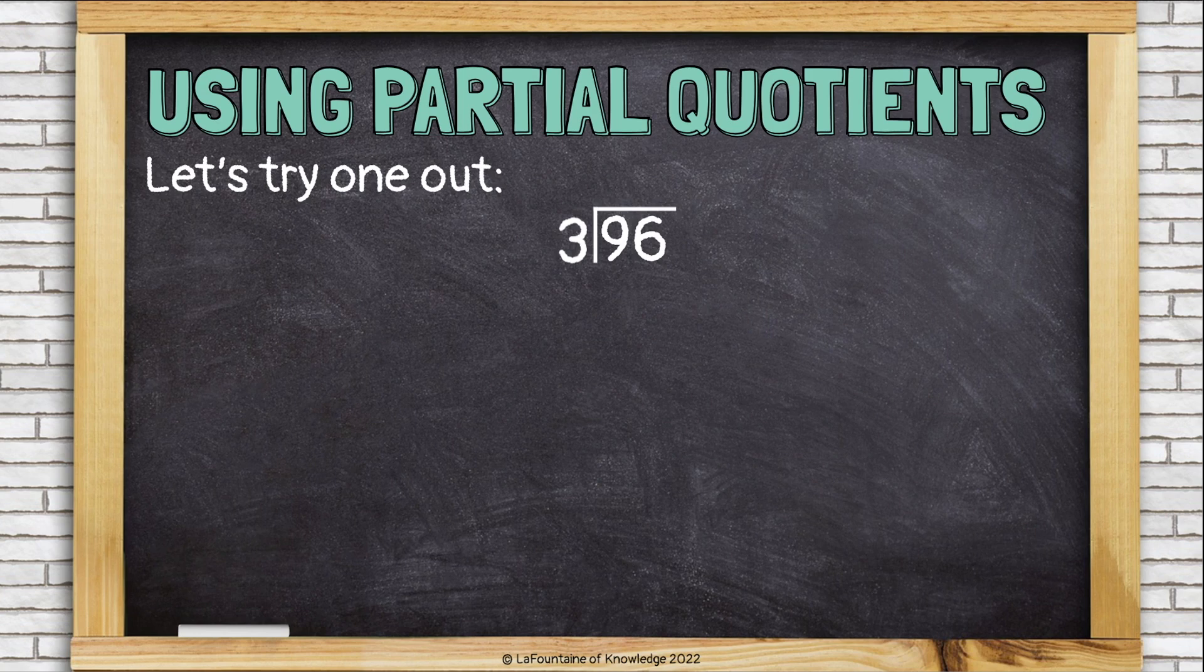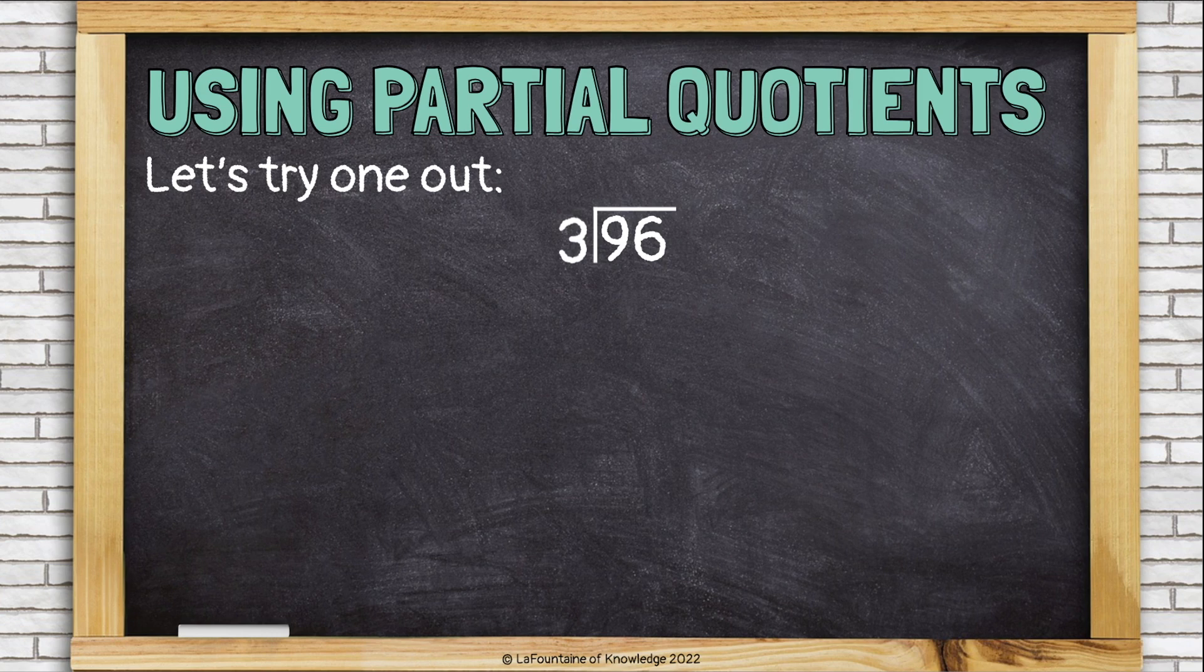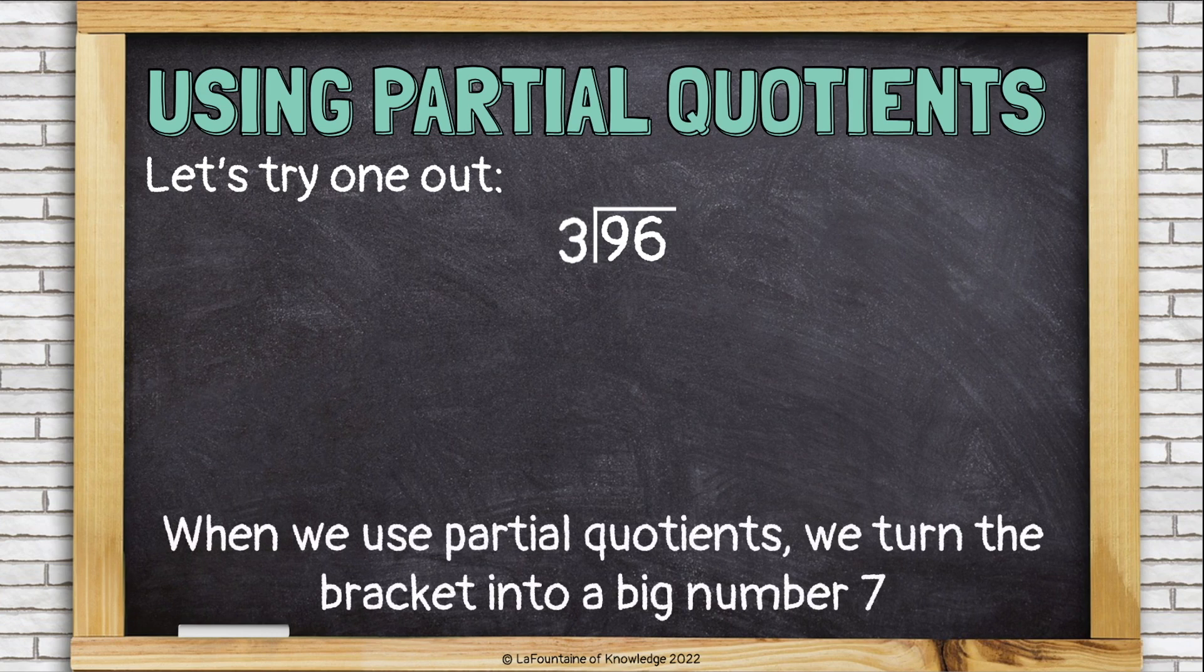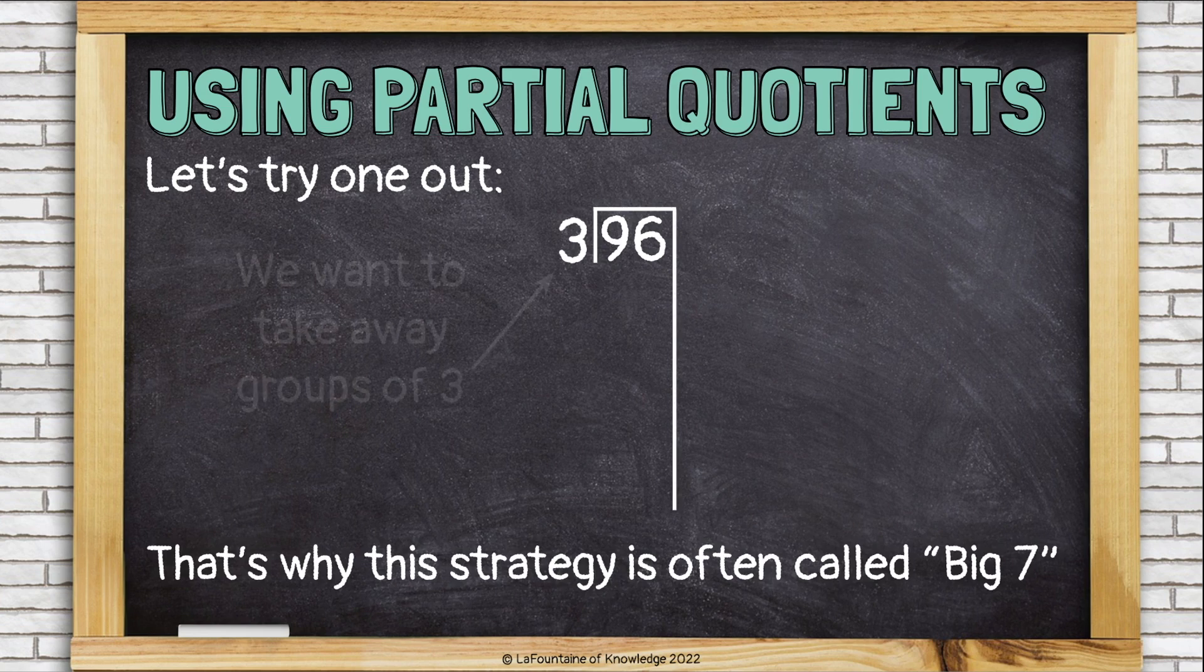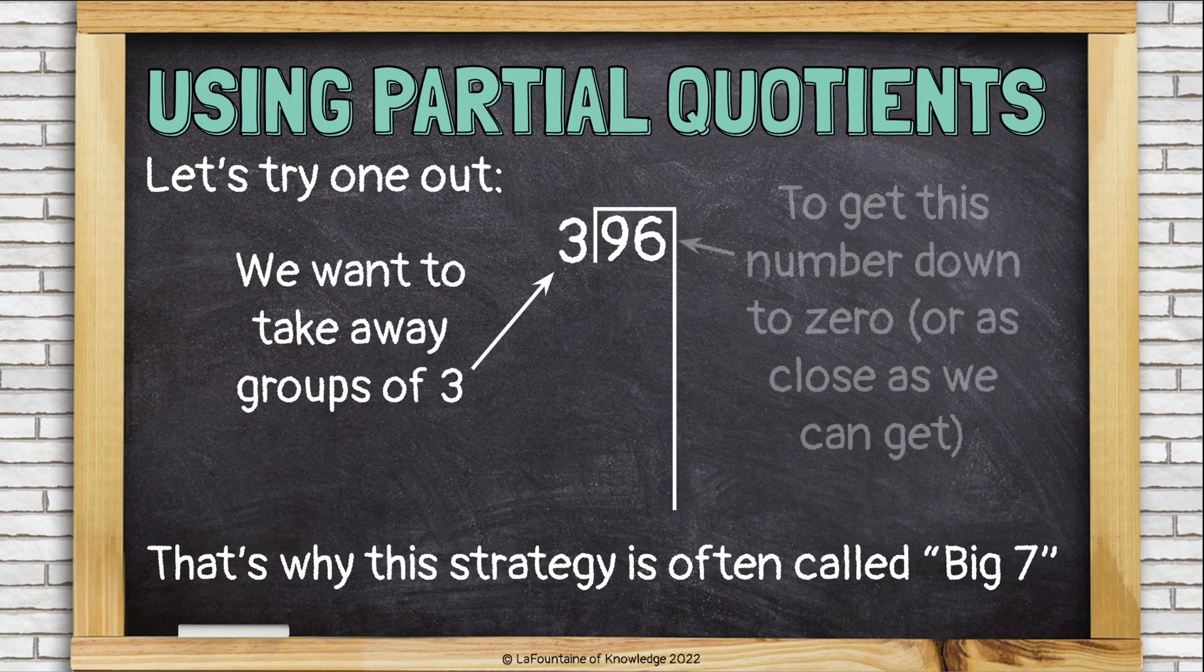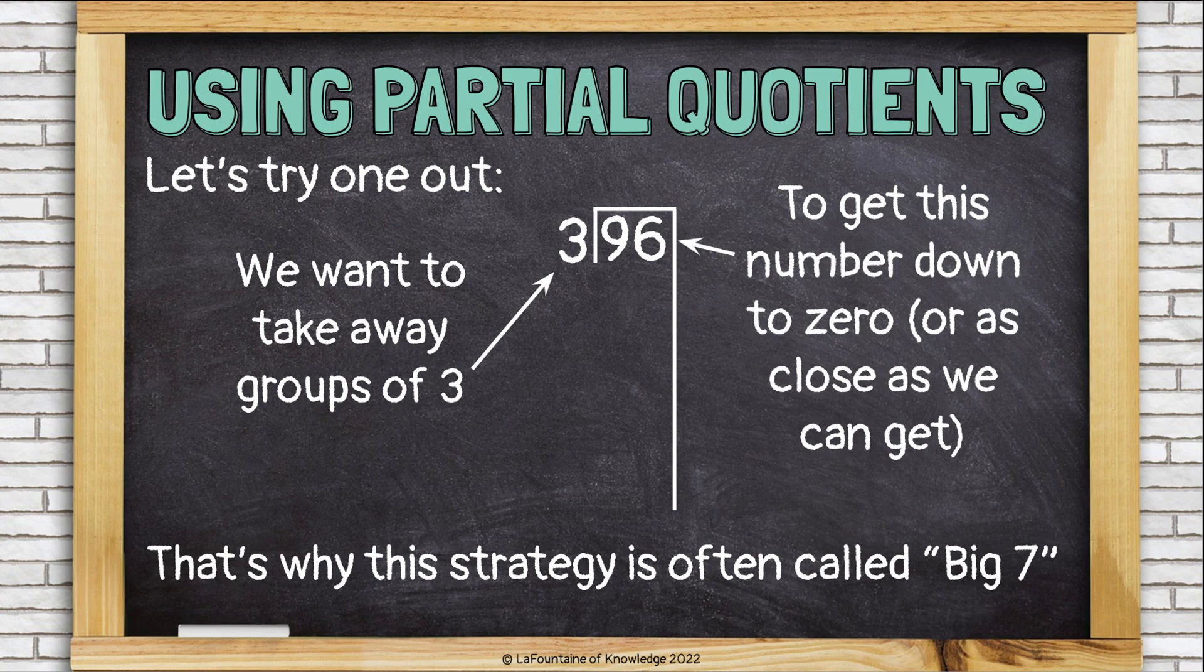Let's try one out. We're going to divide 96 divided by 3 using partial quotients. When we use this strategy, we turn the division bracket into a big number 7, like this. That's why this strategy is often called big 7. We want to take away groups of 3 to get this number, the dividend, down to 0, or as close as we can get to 0.